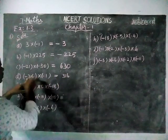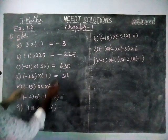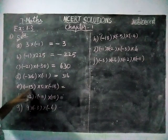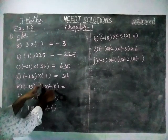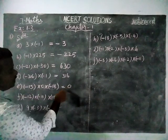Now here, minus 15 into 0 is 0, and again if 0 is multiplied with minus 18, it's 0 only. 0 multiplied by any number is equal to 0.